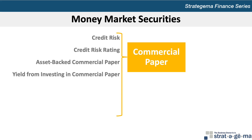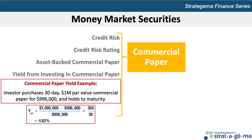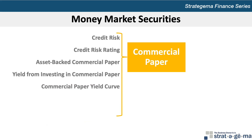The nominal return to investors who retain commercial paper until maturity is the difference between the price paid and the par value. The yield received by a commercial paper investor can be determined in a similar manner to the T-bill yield, although a 360-day year is normally used. For example, if an investor purchases 30-day commercial paper with a par value of $1,000,000 for $996,000 and holds it until maturity, the annualized yield YCP is 4.82%. The commercial paper yield curve represents yields offered at various maturities, and the same factors affecting the treasury yield curve affect the commercial paper yield curve, applied to very short time horizons.